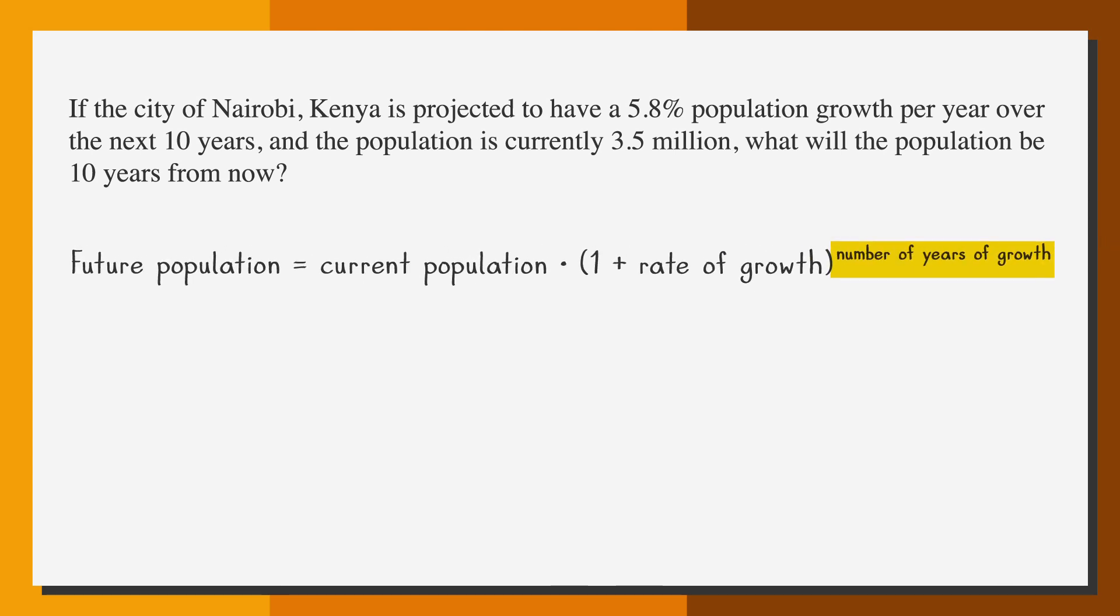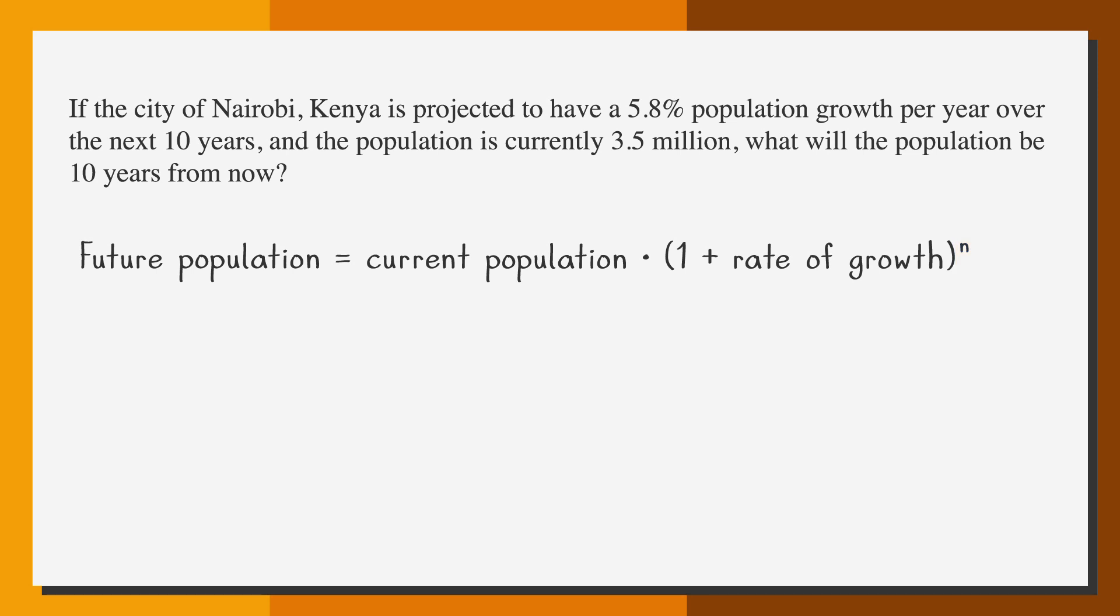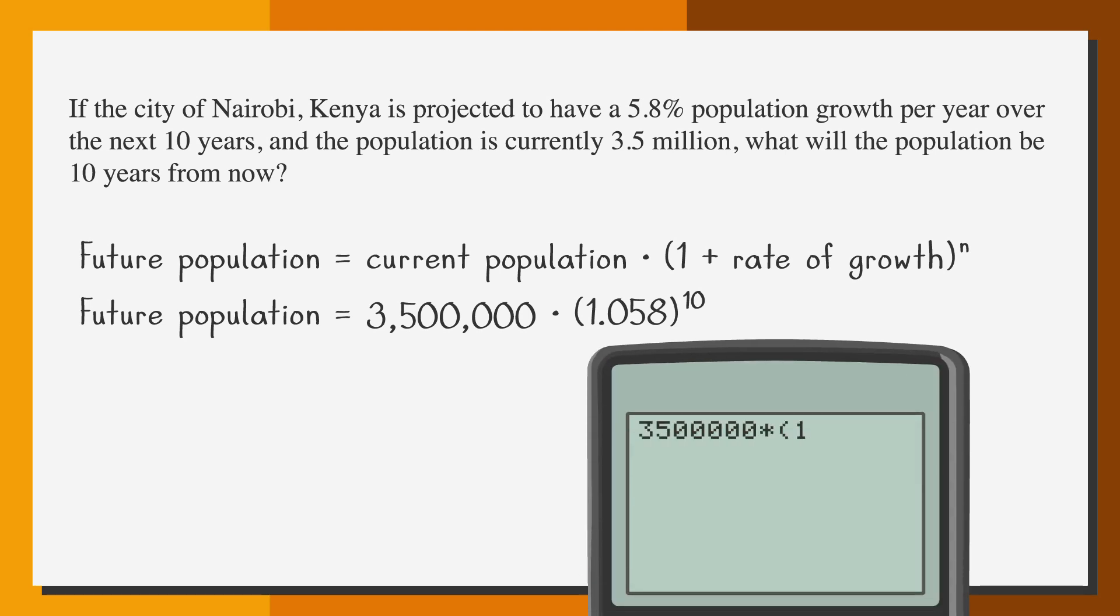Now let's fill in some numbers. The current population is 3.5 million. The rate of growth is 5.8%, which we can write as the decimal .058, and we want 10 years of growth. One last bit of addition, and now we've got our equation all lined up and ready to go. Let's take out our calculator and solve this thing. And there we have it. At the given rate of population increase, Nairobi's population will be over 6.15 million in 10 years.